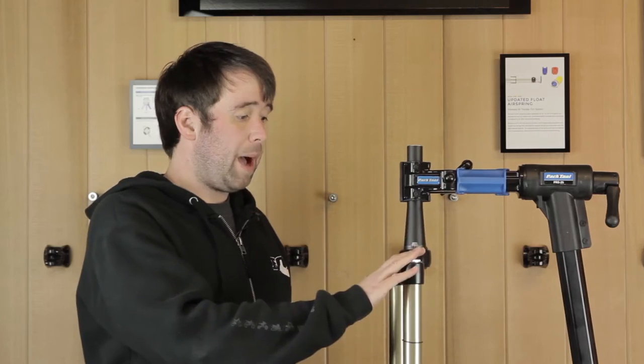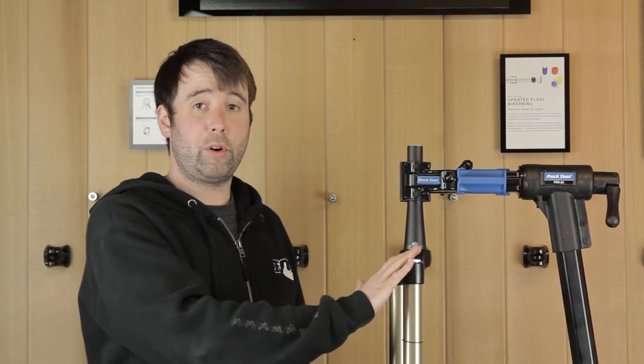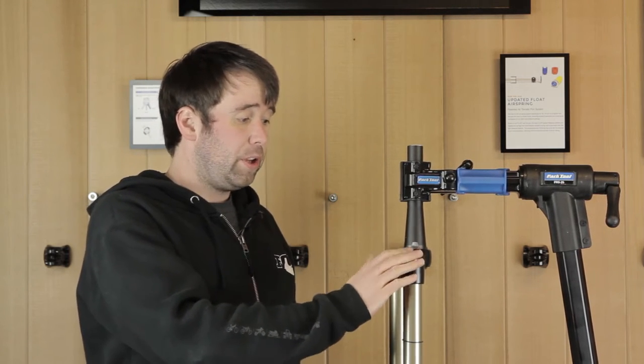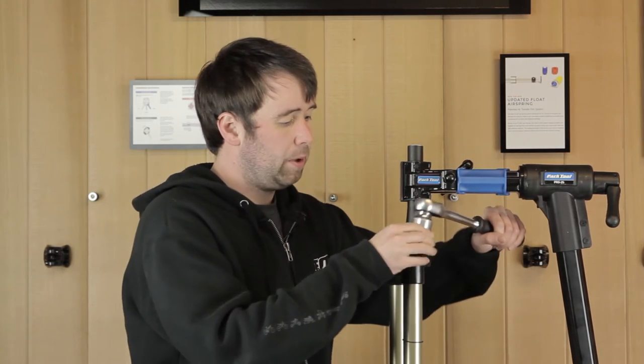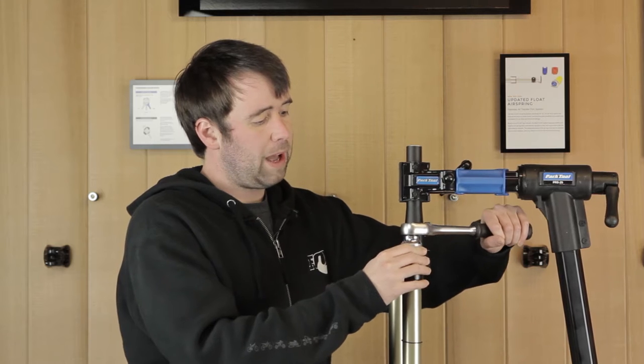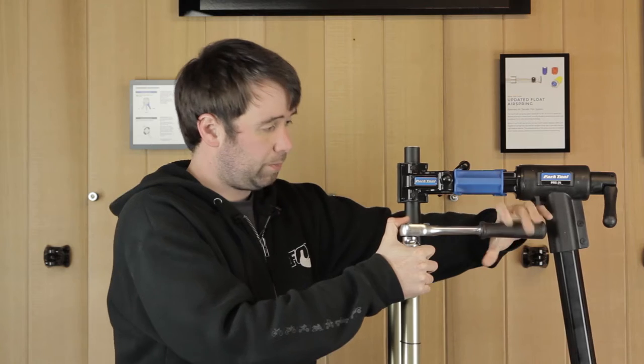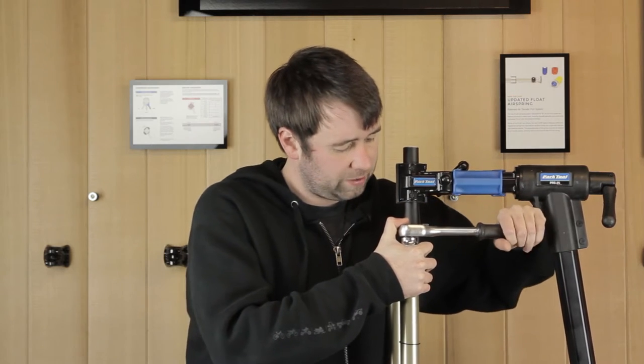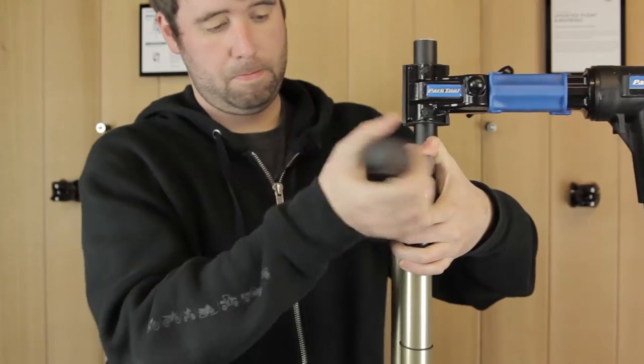You are now ready to remove your top cap. Can't stress this enough: make sure all the pressure, all the air is out of the fork. To remove the top cap you're going to need a 28mm socket. The best way to remove the top cap is to place the socket on top of the top cap, get your right hand, hold the crown with your thumb over the ratchet, bring the fork into your chest, and start to unwind the top cap.